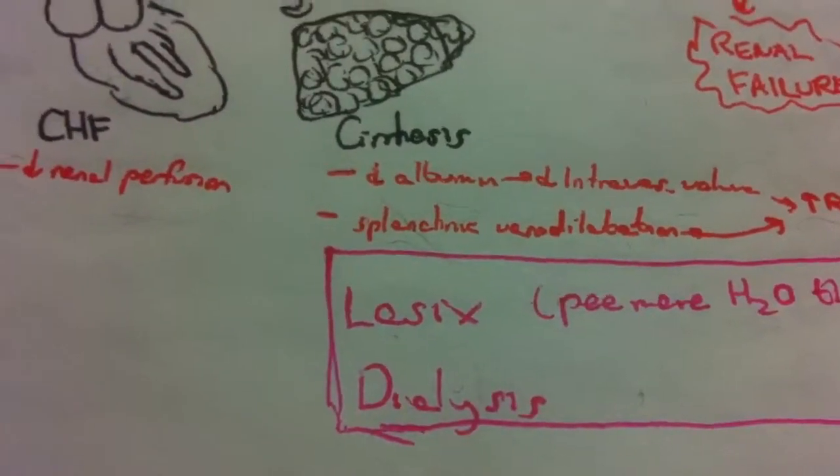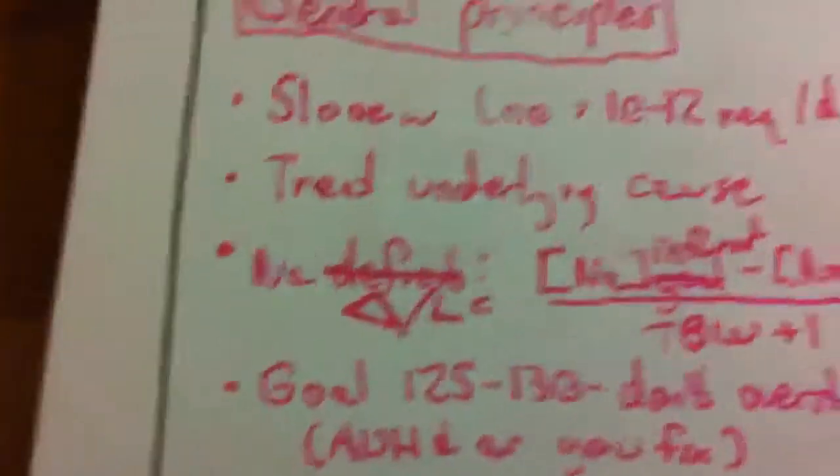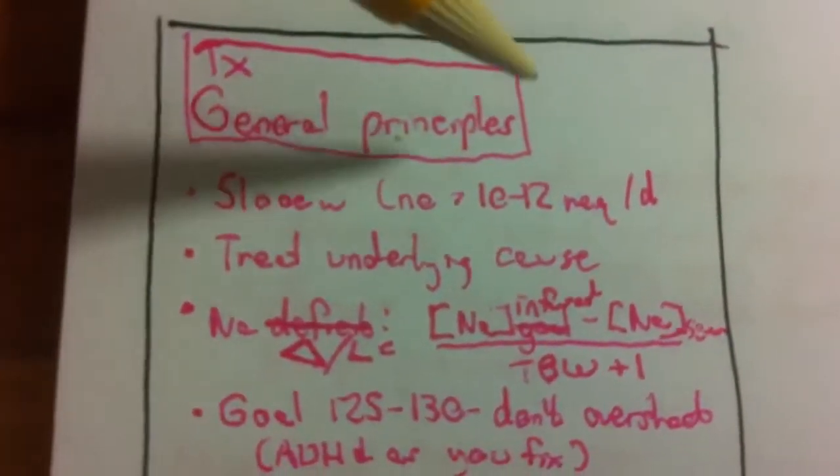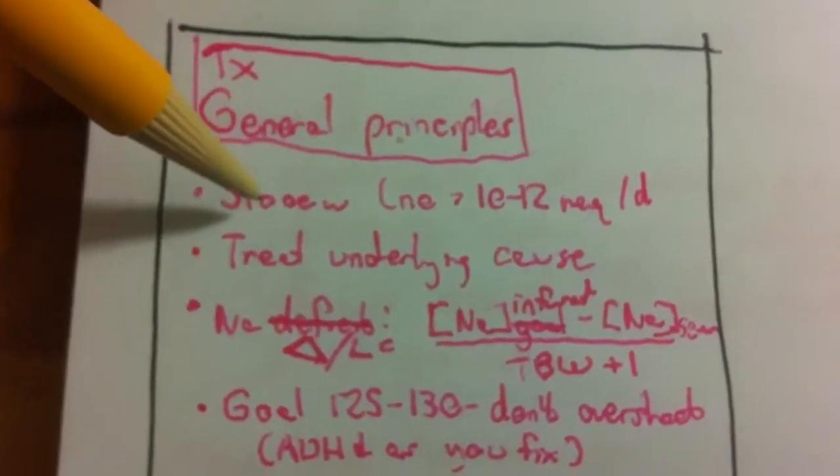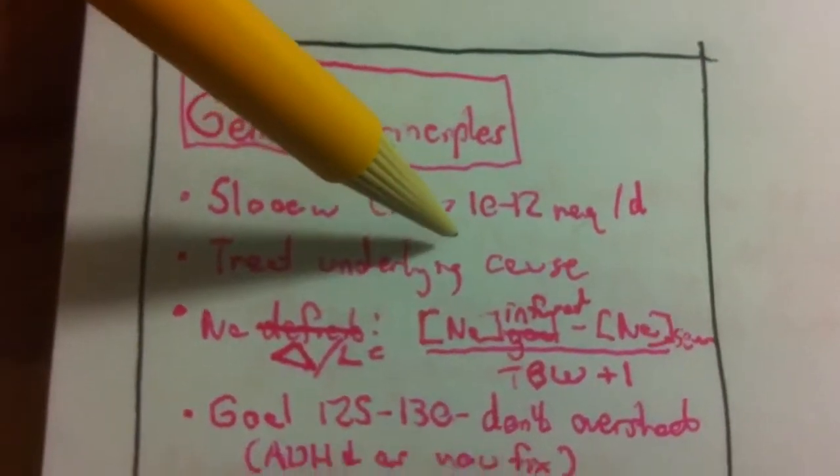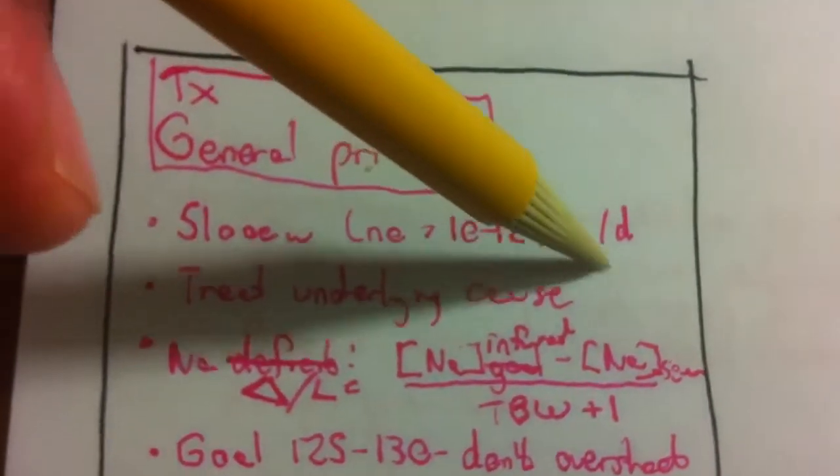So lots of different causes for hyponatremia and lots of different treatments. I want to just spend a couple minutes over here in general principles for treatment. The first thing being you want to bring the sodium back up slowly, no greater than 10 to 12 milliequivalents per day.